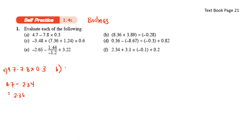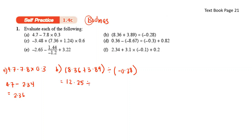Moving on to B: 8.36 plus 3.89, in brackets, divided by negative 0.28. According to the BODMAS rule, we do what is in the bracket first: 8.36 plus 3.89 gives 12.25. Then 12.25 divided by negative 0.28 gives us negative 43.75.